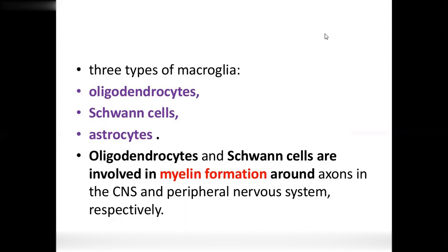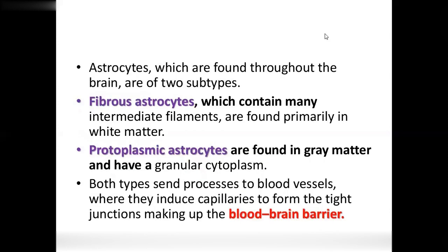Astrocytes are star-shaped cells found throughout the brain. Fibrous astrocytes contain intermediate filaments and are found primarily in white matter, which contains axons with myelin sheaths. Protoplasmic astrocytes are found in grey matter, associated with cell bodies. Both types send processes to blood vessels, including capillaries.